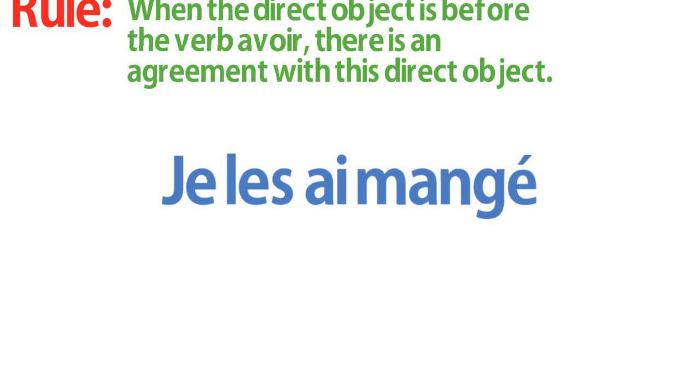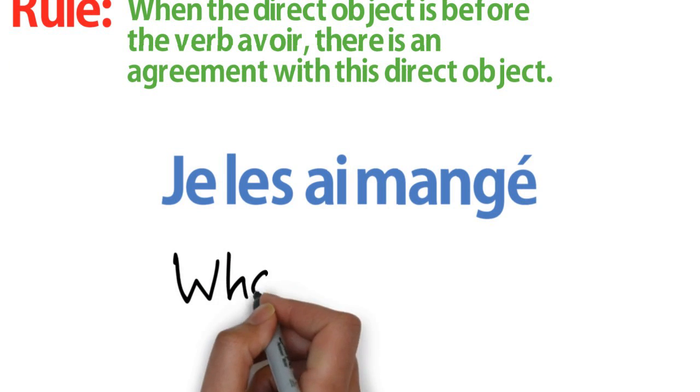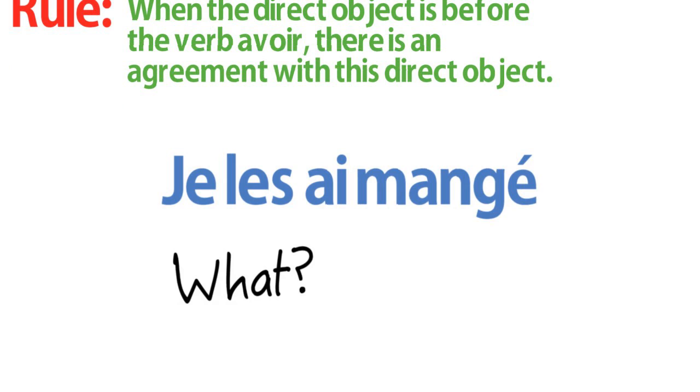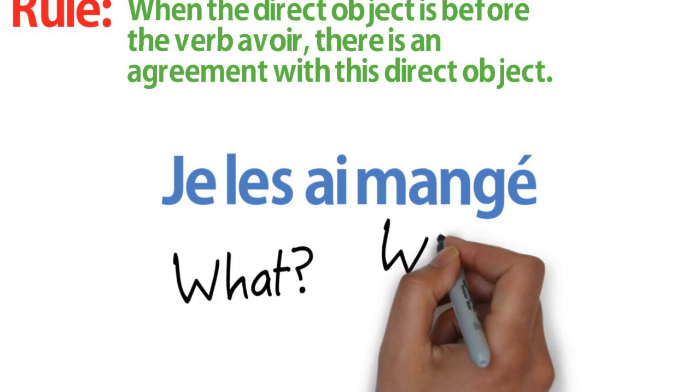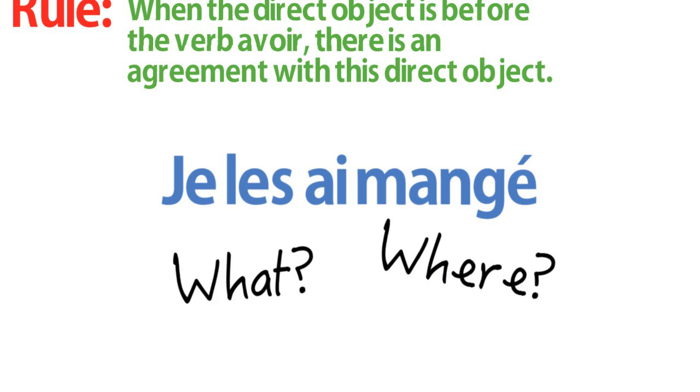So, let's see if we are right when we write je les ai mangé. What, the first question, what is the direct object? The direct object here is les, which is feminine and plural for pommes. Where it is?